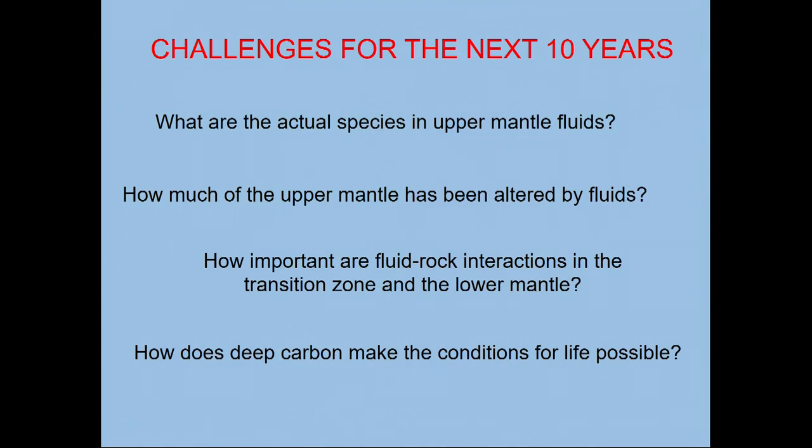How much of the upper mantle has been altered by fluids? How important are fluid-rock interactions in the transition zone of the lower mantle? We've heard about some remarkable studies earlier in the sessions about diamonds from the very deep earth containing all kinds of extraordinary inclusions. To what extent might deep fluids be involved in these diamonds, in their formation, and also in the inclusions inside them? And finally, the ultimate question I think that so many of us are interested in in the Deep Carbon Observatory is how does deep carbon make the conditions for life possible on Earth and, of course, on other planets, including exoplanets that are being discovered at such a rapid rate?